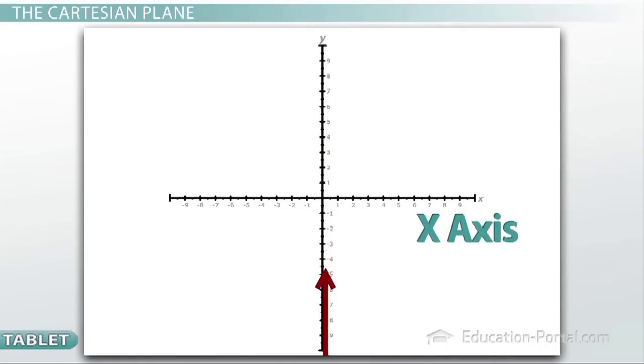The coordinates that go up and down are the y coordinates, which makes the line through the middle going up and down, the y-axis.